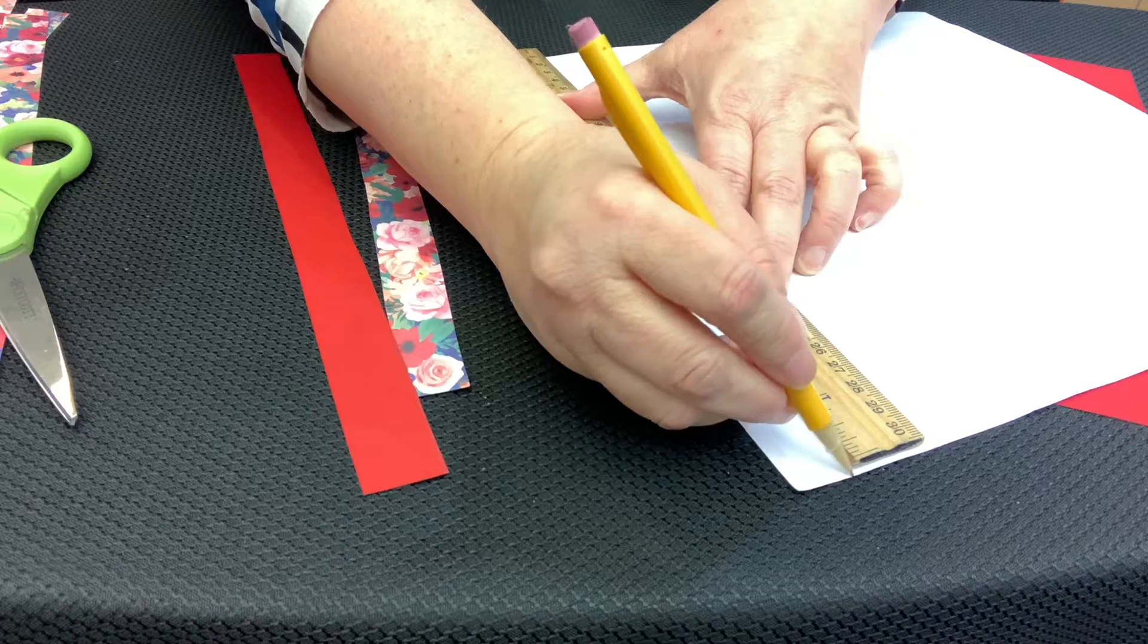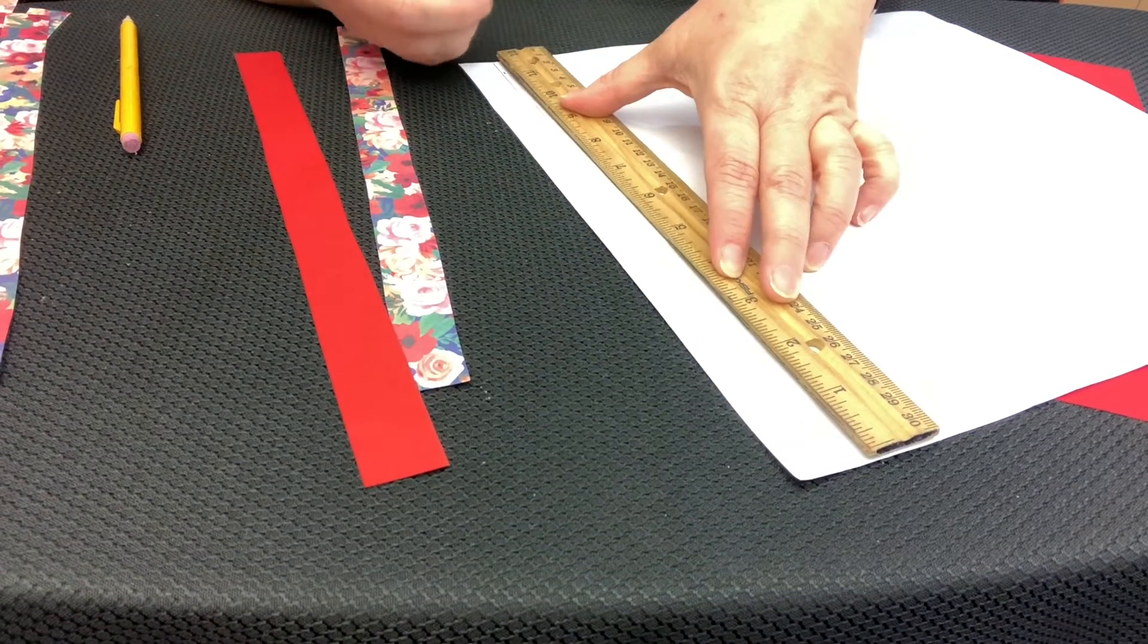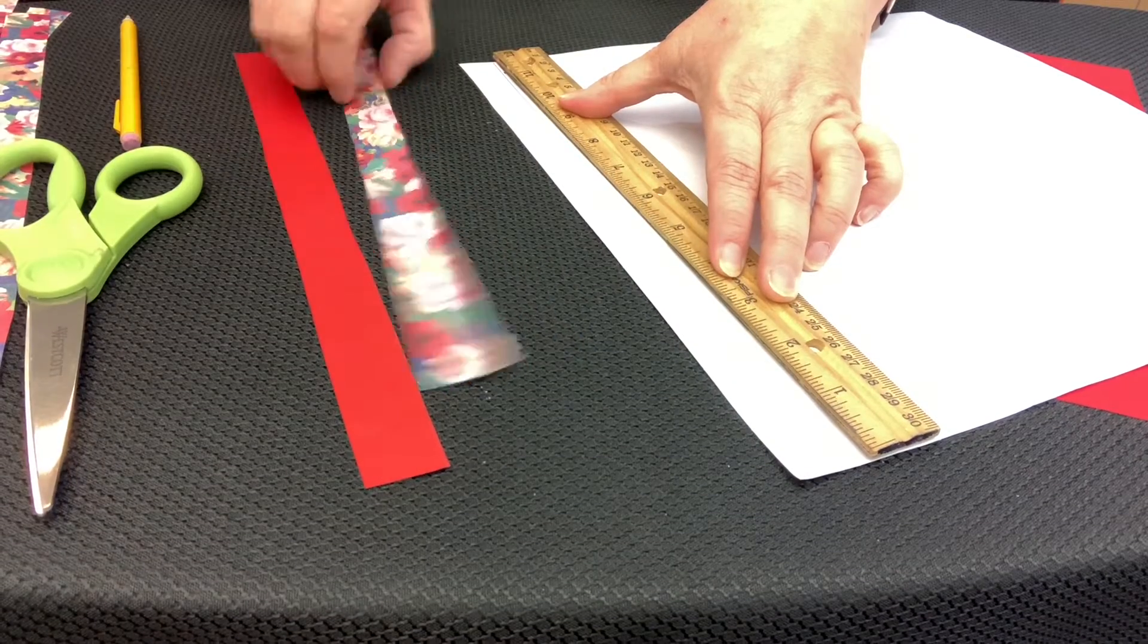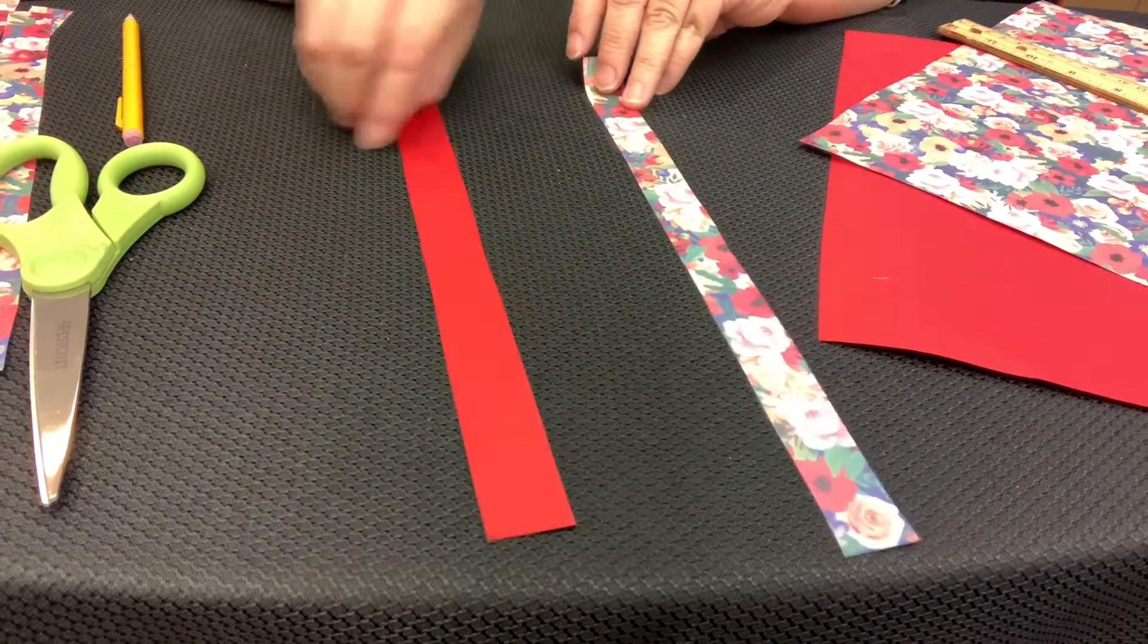So you're going to mark the back of the paper and then you're going to cut out the strips. Again, it's three-quarter inch wide and 12 inches long.